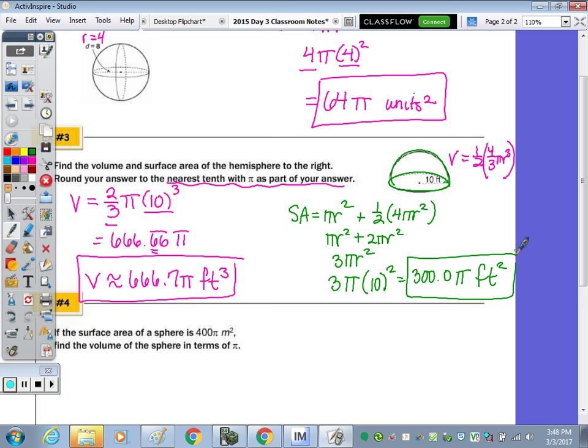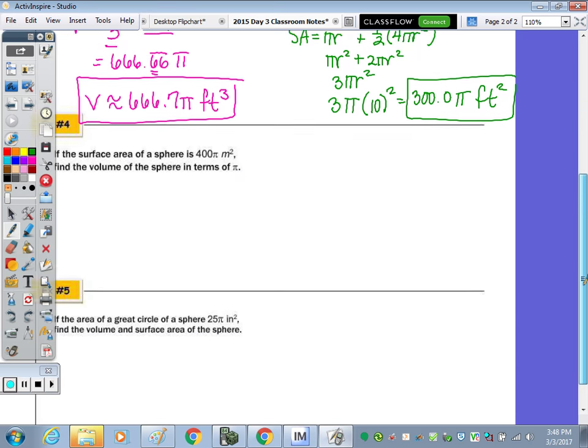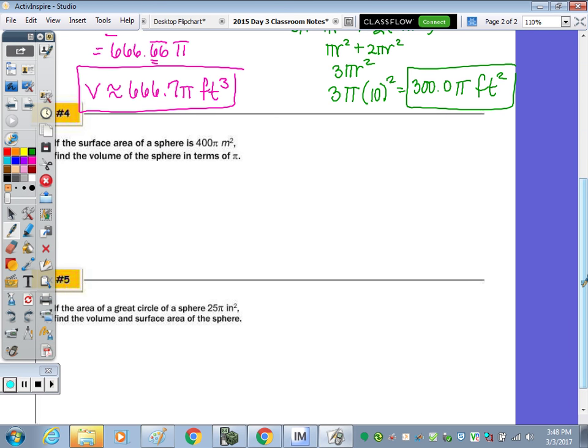Number four, if the surface area of a sphere is 400π square meters, find the volume of the sphere in terms of pi. So let's write out the formula.